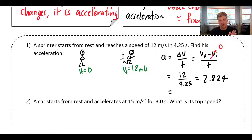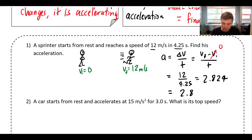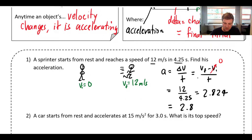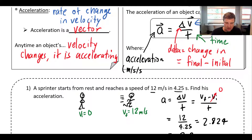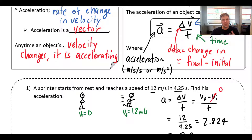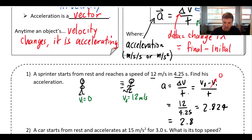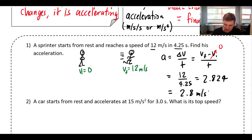Rounding to significant figures — my original numbers had two or three sig figs, so I'll call it 2.8. Now I need to figure out the units. Going back to the formula, acceleration is meters per second divided by seconds, which is meters per second per second — or more simply, meters per second squared. So the answer is 2.8 meters per second squared.